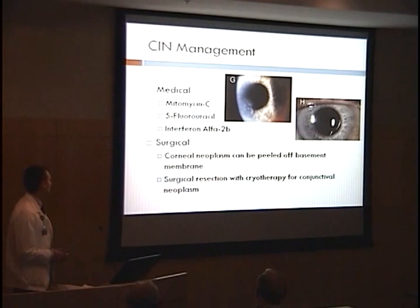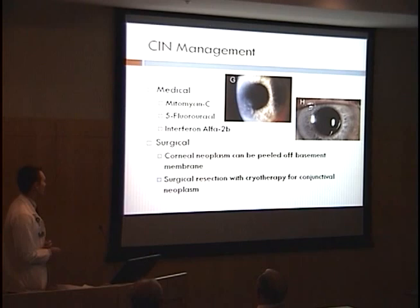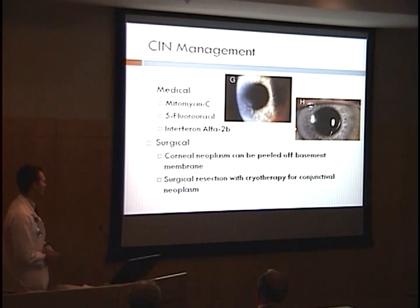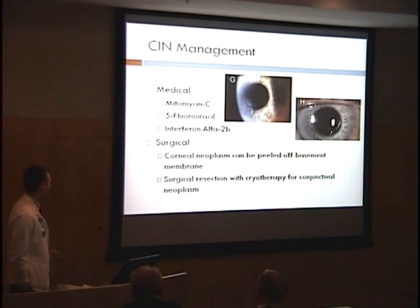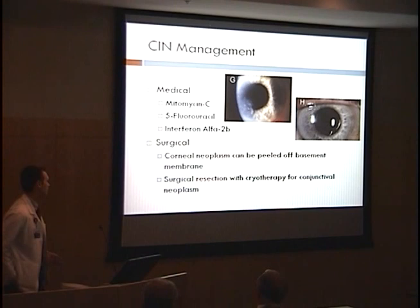For CIN management, papers discuss the anti-cancer agents mitomycin C, 5-fluorouracil, and interferon alpha-2b. One patient was treated for several months with interferon alpha-2b for CIN in the cornea, and after about 18 months of treatment, the wound was completely healed with no recurrence during the study's three-year follow-up. Surgically, neoplasm confined to the cornea can simply be peeled off the basement membrane as long as it's confined to the epithelium. If there is neoplasm in the conjunctiva, surgical resection can be done with cryotherapy, and a study found this prevented recurrence after about three years of follow-up.